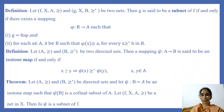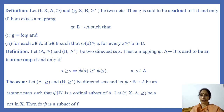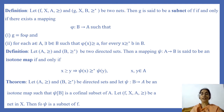Let us define a subnet of a net. Let (F, X, A, ≥) and (G, X, B, ≥*) be two nets. Here A with ≥ is a directed set and F is a function from directed set A to X, and B with ≥* is a directed set and G is a function from directed set B to X. Then net G is said to be a subnet of net F if and only if there exists a mapping φ from B to A such that G = F ∘ φ.